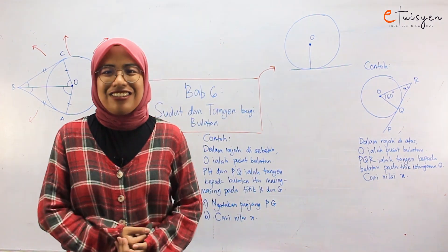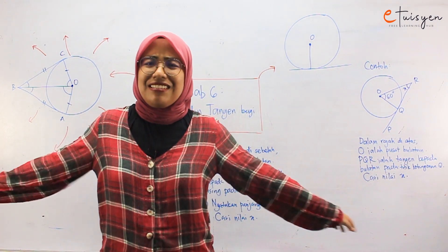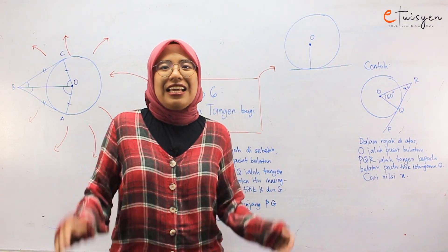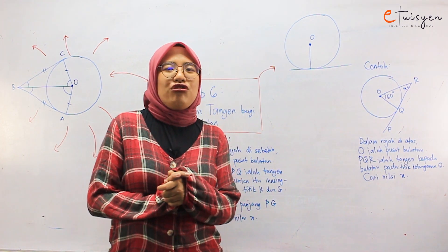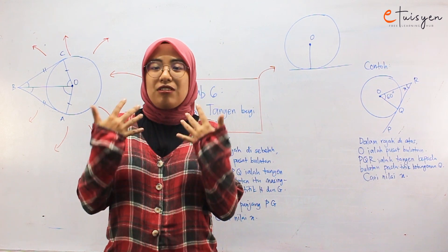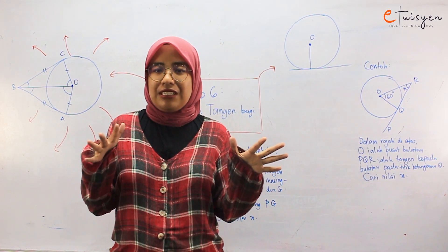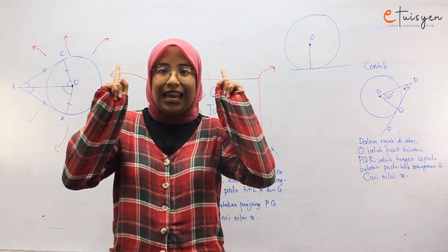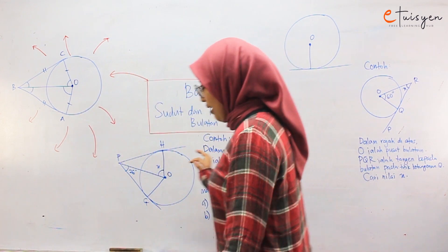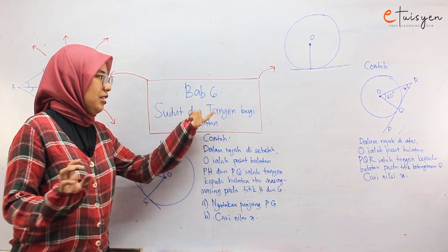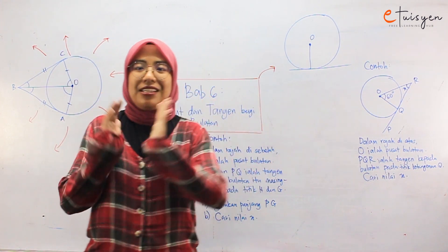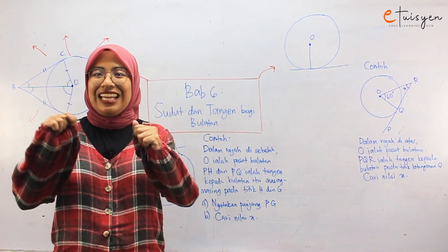So by the end of this video, kita akan habiskan semua ciri-ciri bulatan yang kita ada. So kita akan continue to discuss about this chapter. So ciri yang pertama untuk video ni, kita akan belajar tentang tangent.